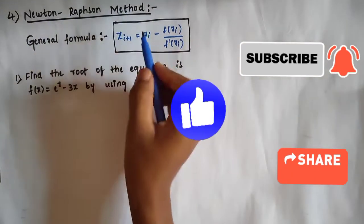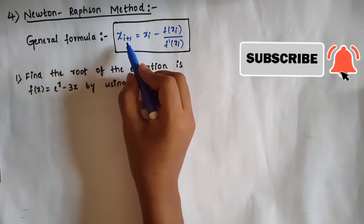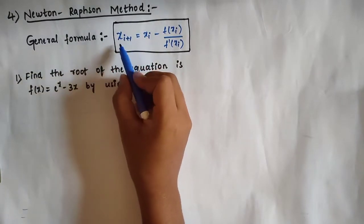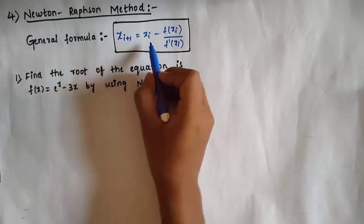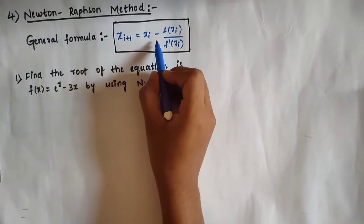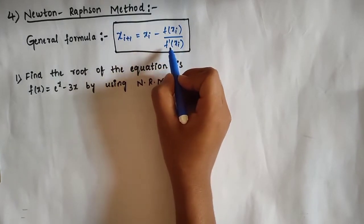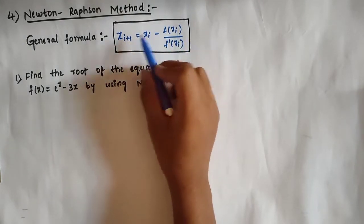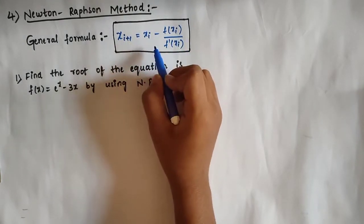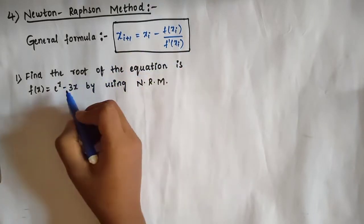The Newton-Raphson method has the general formula: x_(i+1) = x_i minus f(x_i) divided by f'(x_i). This is the general formula of the Newton-Raphson method.